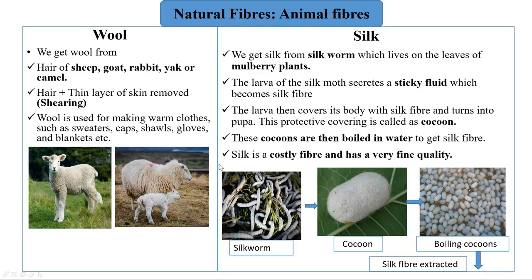There are two important animal fibers: wool and silk. We get wool from the hair of sheep, goat, rabbit, yak, or camel. The hair along with a thin layer of skin is removed to get wool fiber — this process is called shearing. Wool is used for making warm clothes such as sweaters, caps, shawls, gloves, and blankets.